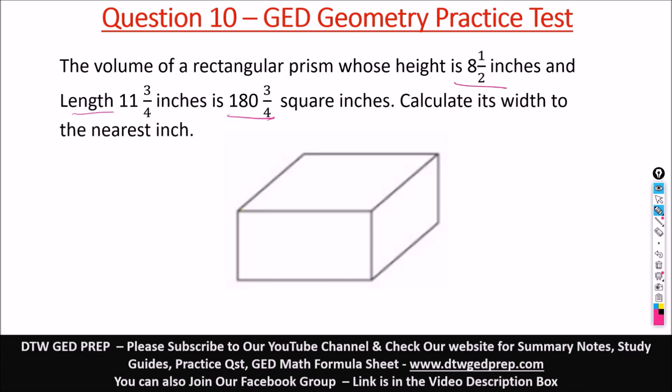What is the formula for finding the volume of a rectangular prism? It is V = L × W × H (volume equals length times width times height). We know our volume V.